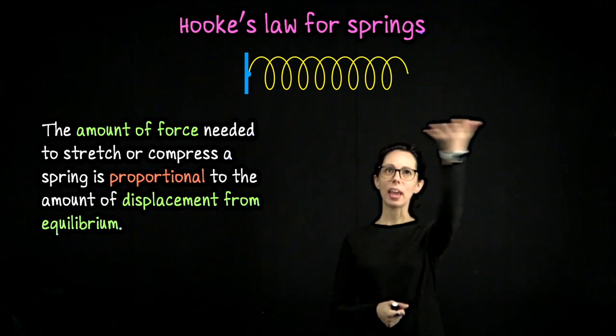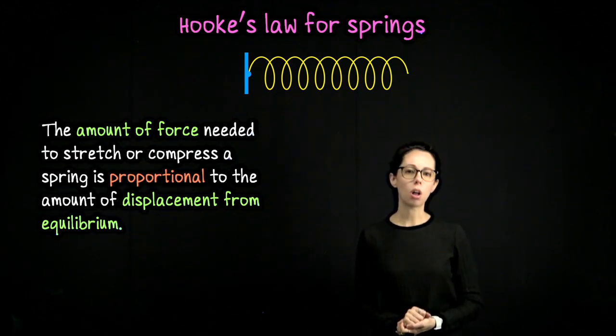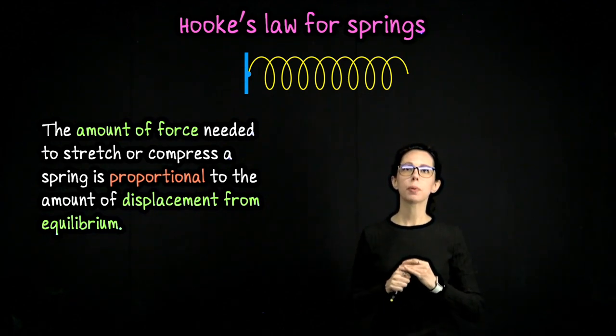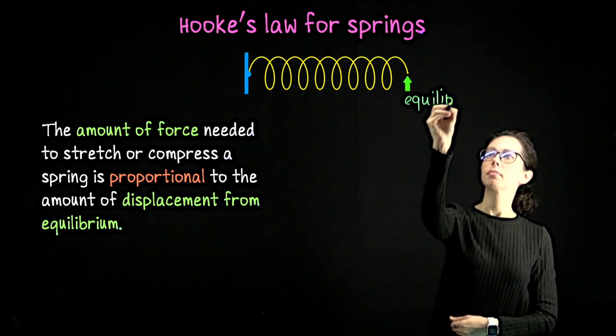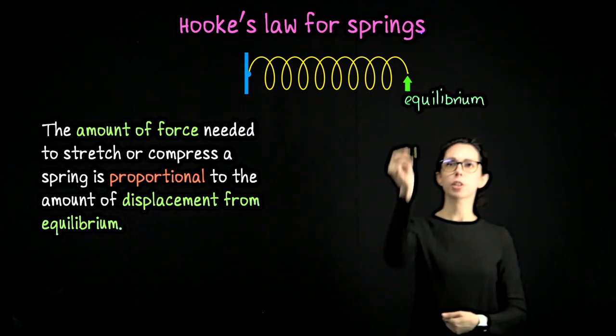Consider a horizontal spring which is attached to a wall on the left so that the natural resting state of the spring is here. We'll call this equilibrium, the natural length of your spring.